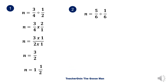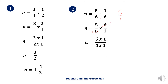Let's have another example. n is equal to five over six divided by one over six. I'll get the reciprocal of one over six, which is six over one. The division symbol becomes multiplication. So I have five over six times six over one. I'll factor out six and six — six divided by six is one. So n is equal to five times one all over one times one, which is five over one, or n is equal to five.